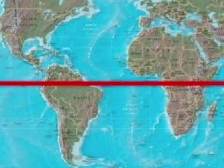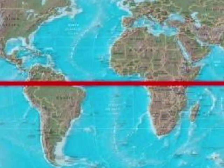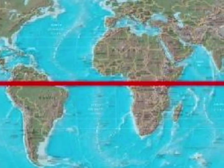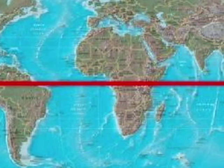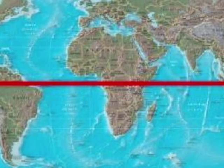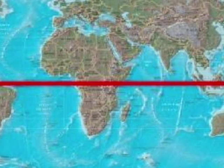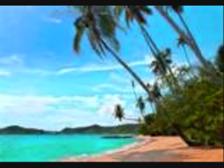The equator is the imaginary line that divides the Earth into northern and southern hemispheres. Places close to the equator do not tilt much toward or away from the Sun during Earth's orbit. Places along or near the equator receive the most direct sunlight year-round and have warmer temperatures and weather.